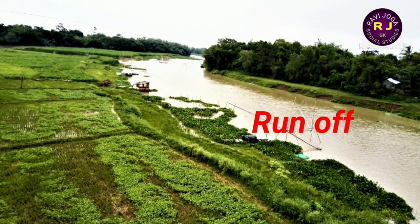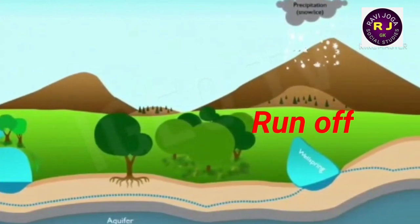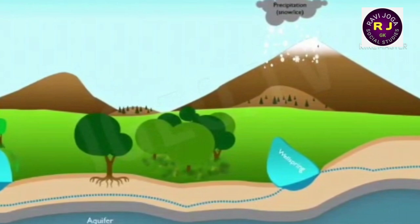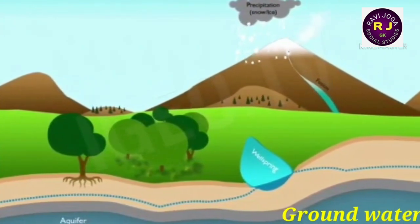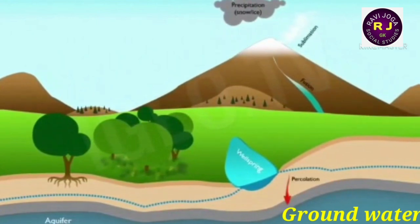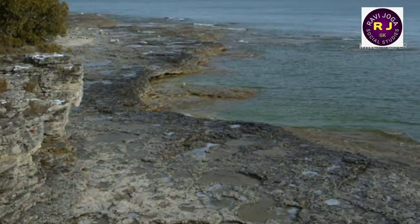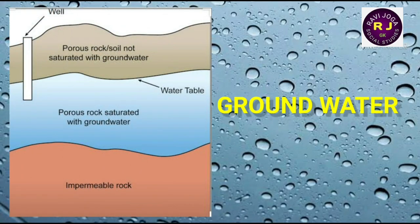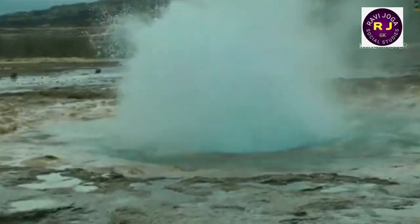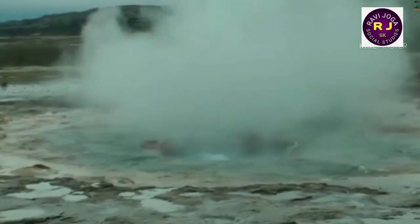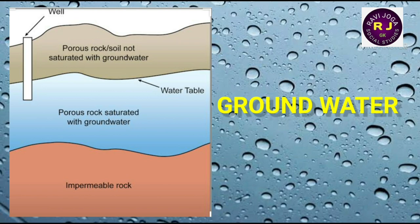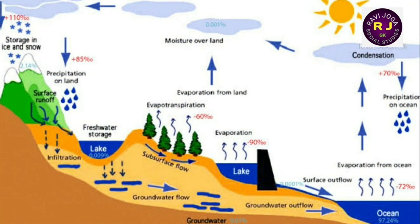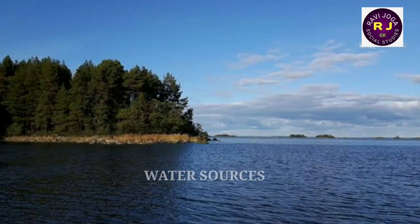Runoff: water returned by precipitation flows down the hills. Some of the water is percolated into the soil, recharging groundwater, while the rest flows and returns to the oceans where it is evaporated. Sometimes groundwater can flow upward in the form of artesian springs. It flows slower than runoff water. In the hydrological cycle, water is circulated between the ocean, atmosphere and land, and there are a number of sub-cycles as well.